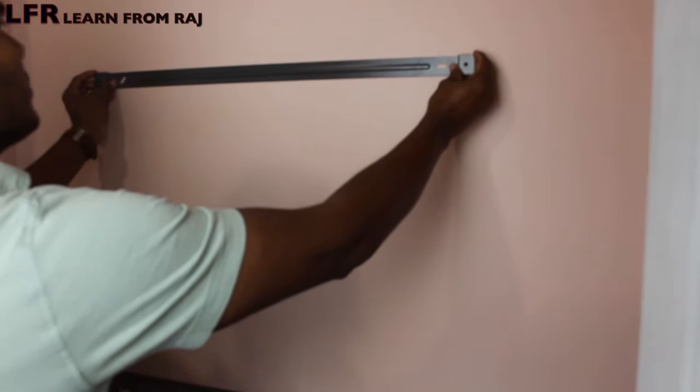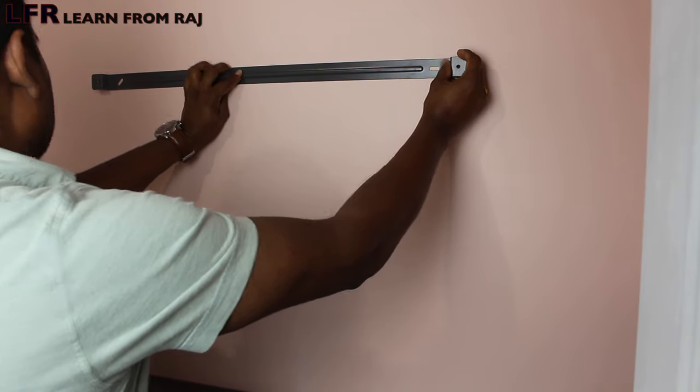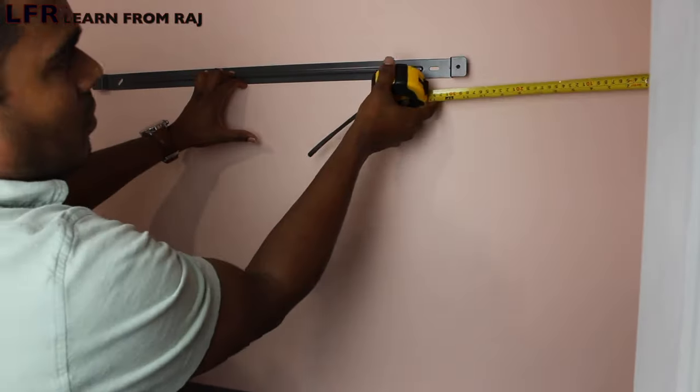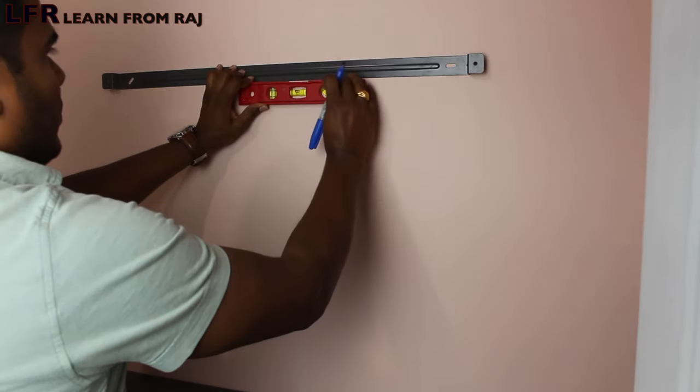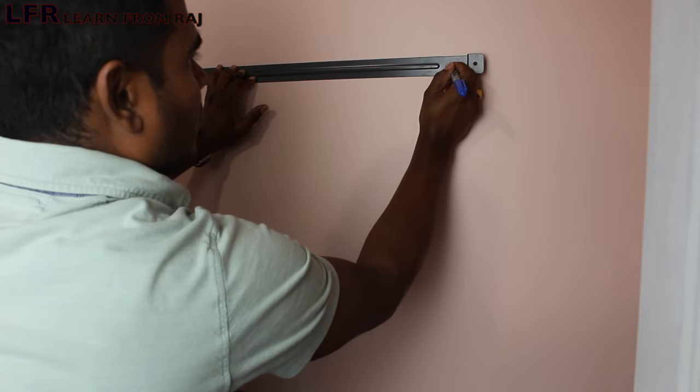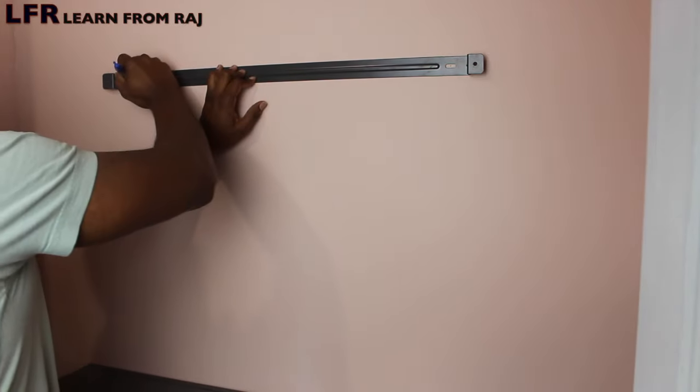I have marked the board placement area. Now I'm going to place the bar and do the same thing to make sure I'm installing it in the middle. With the marker, now I'm going to mark two spots where I'm going to drill.